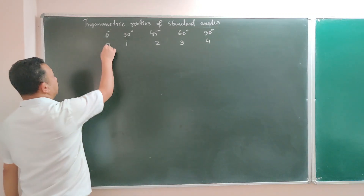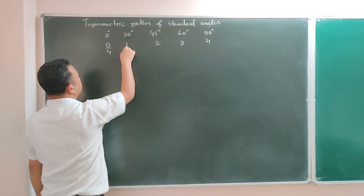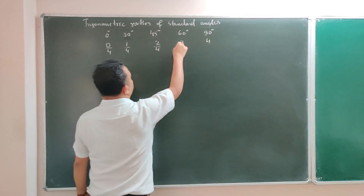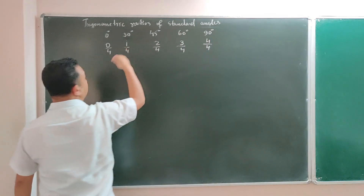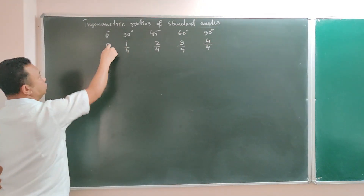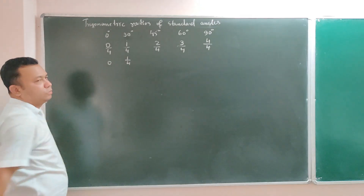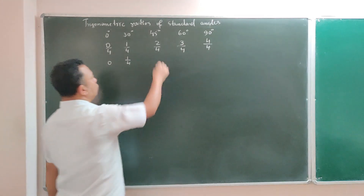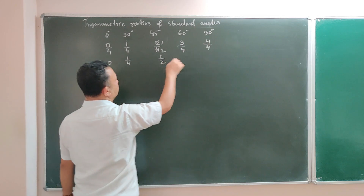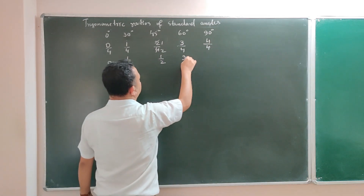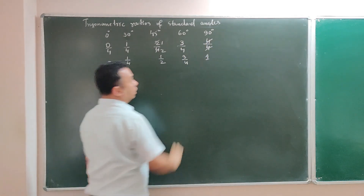Immediately follow the first step by dividing all these numbers by 4. So divide all numbers by 4 and write down the value. 0/4 is 0, 1/4 is 1/4, 2/4 simplifies to 1/2, 3/4 is 3/4, and 4/4 cancels to give 1. Second step: write from 0 to 4, divide all numbers by 4, and write the simplified form.